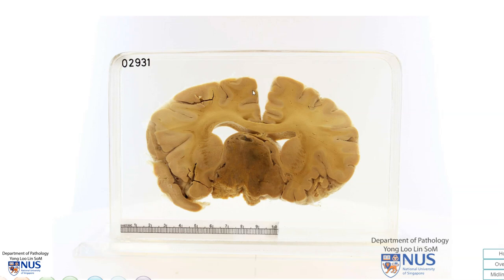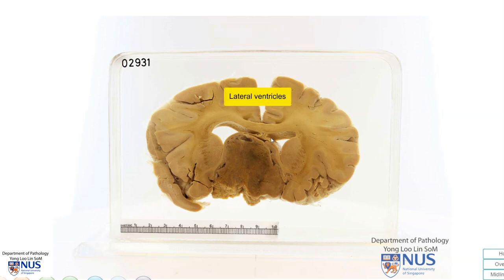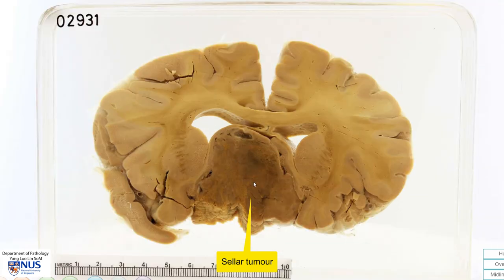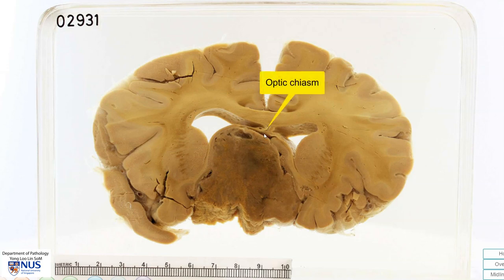This is a coronal slice of the brain and we can see the cerebral hemispheres, the lateral ventricles, and this is actually a very markedly expanded sellar tumour mass. There is a brownish, relatively well-circumscribed tumour mass arising from the sellar region, and it is compressing on the optic chiasm just superior to it.